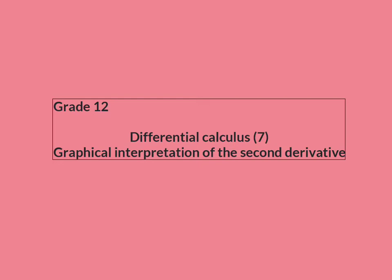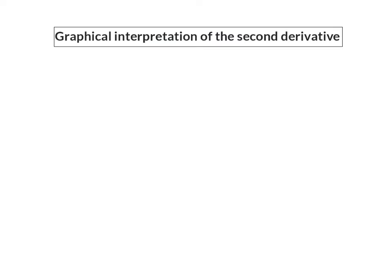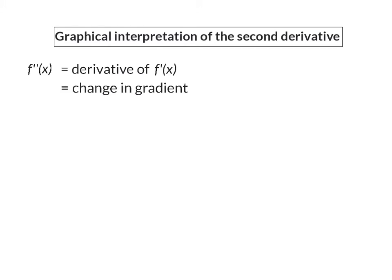In this lesson we are going to have a look at the graphical interpretation of the second derivative. The second derivative is determined when you differentiate the first derivative again, and this value indicates the change in gradient.